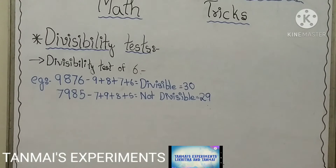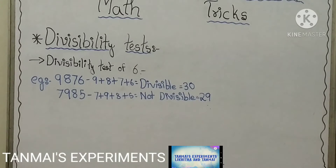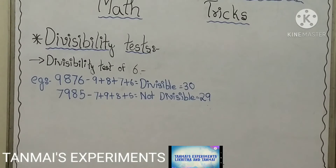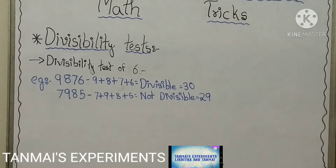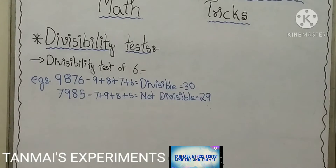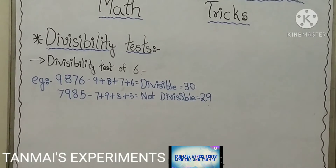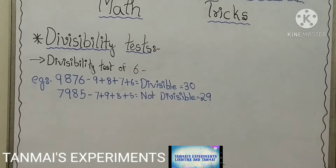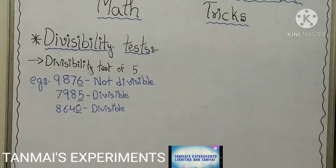The next example is 7,985. 7 plus 9 plus 8 plus 5 equals 29, which is not divisible by 3. And the last digit is 5, which is an odd number, so it is not divisible by 2 either. Hence the entire number 7,985 is not divisible by 6.